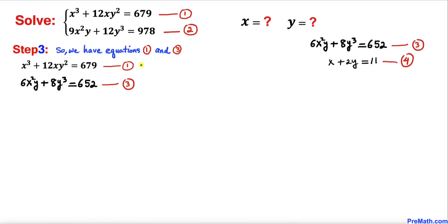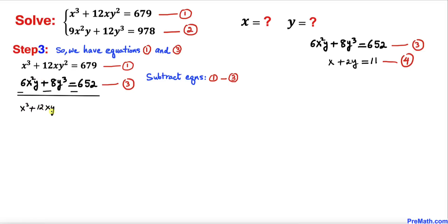Now let's focus on equations 1 and 3 again. This time we are going to subtract equation 3 from equation 1. Changing the signs, we get: x³ + 12xy² − 6x²y − 8y³, and on the right-hand side when we subtract it gives us 27.